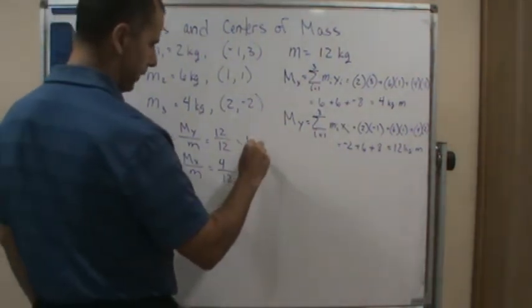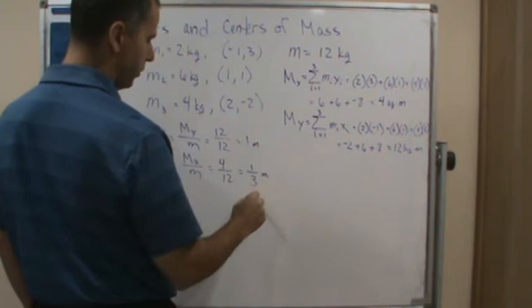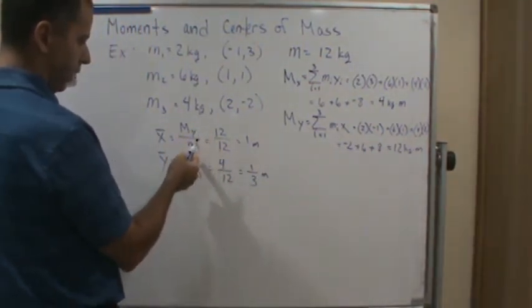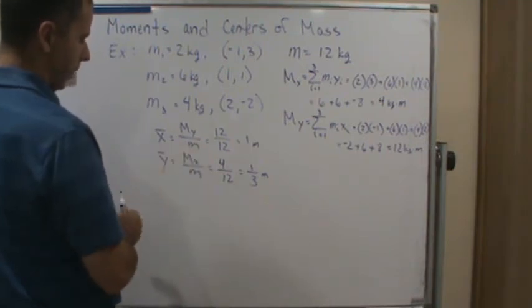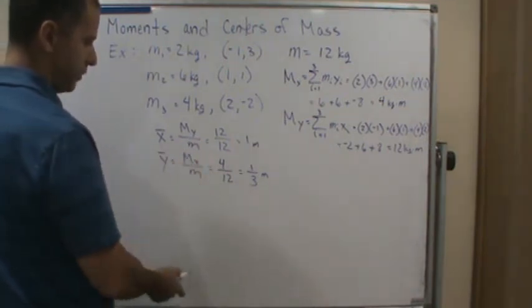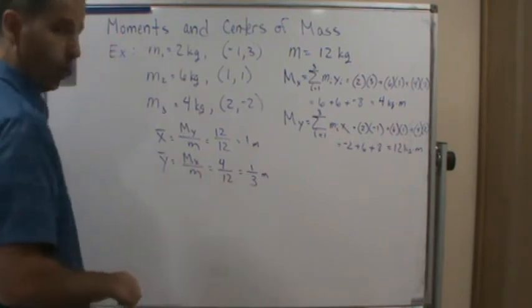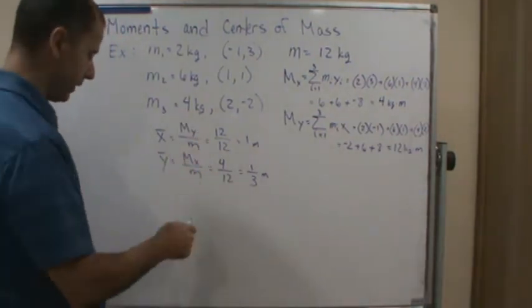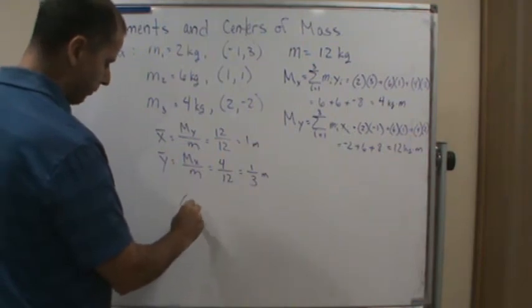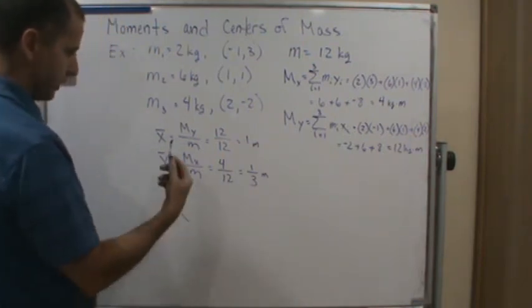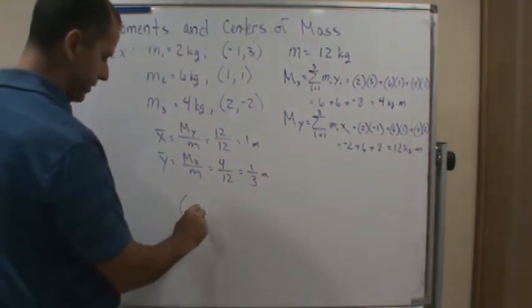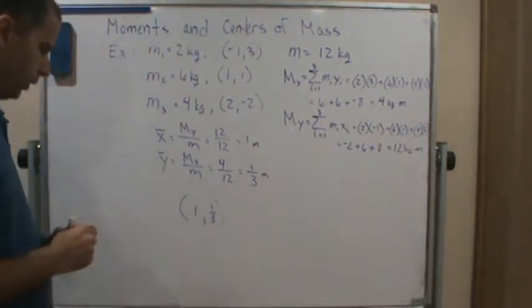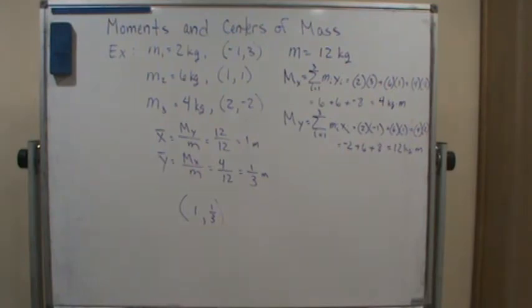And so these are both in meters. And if you do the unit analysis, it works out. If you've got kilogram meters over kilograms, you're going to end up with meters. So it's a position, so it makes sense. We did it correctly. So that means we got our final answer. So the center of mass is located at 1 comma 1 third. And that's it.